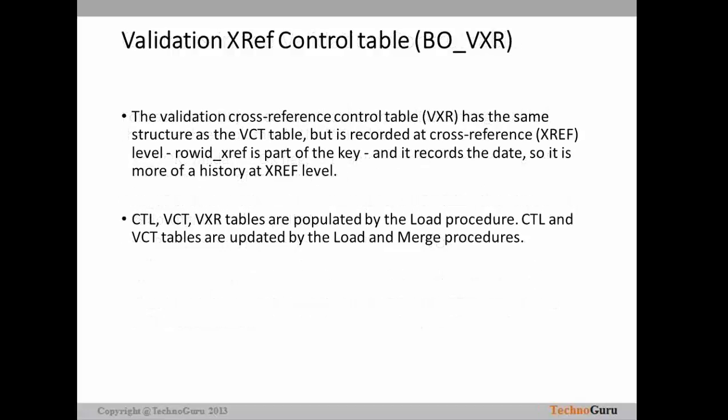The next table is the validation X-Ref control table, which ends with VXR. The validation cross-reference control table has the same structure as the VCT table, but is recorded at the X-Ref level. All records from the X-Ref table will be inserted into VXR, while all records in the base object will be inserted into VCT. The VXR table is maintained at the X-Ref level — ROWID_XREF is part of the key — and it records the date, making it more of a history at the X-Ref level. CTL, VCT, and VXR tables are populated by the load procedure, and CTL and VCT tables are also updated by the merge procedure.